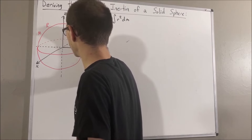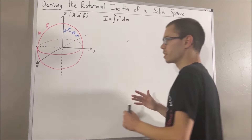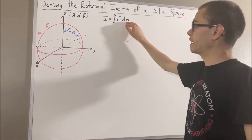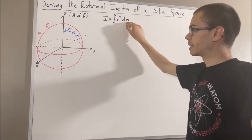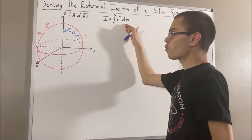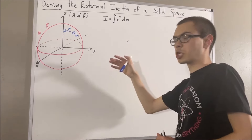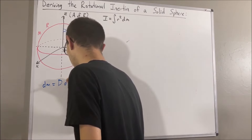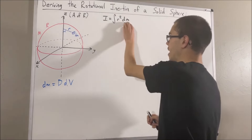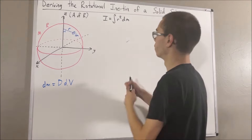And r refers to the distance from our differential mass to the axis of rotation. Now first, it's probably going to be nice if we re-express dm using density. Differential mass is equal to density times differential volume.